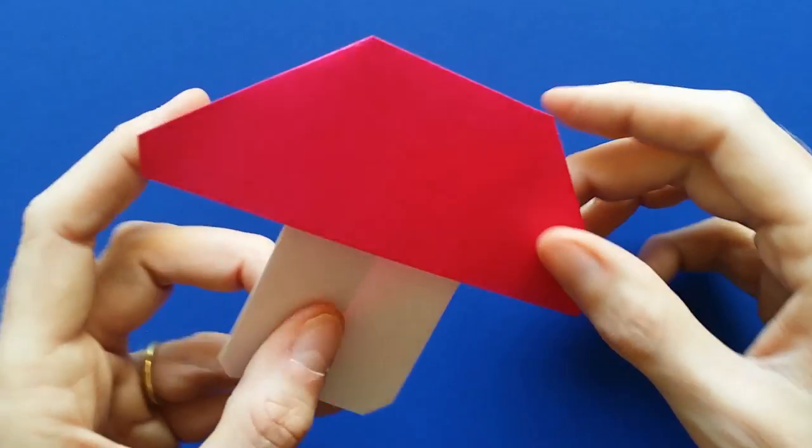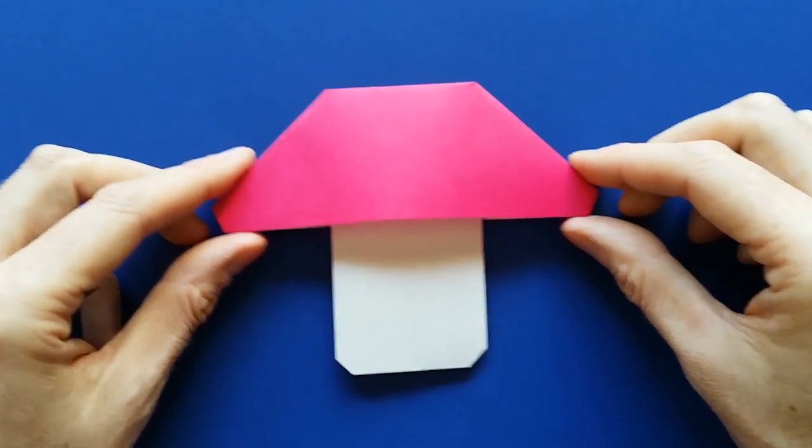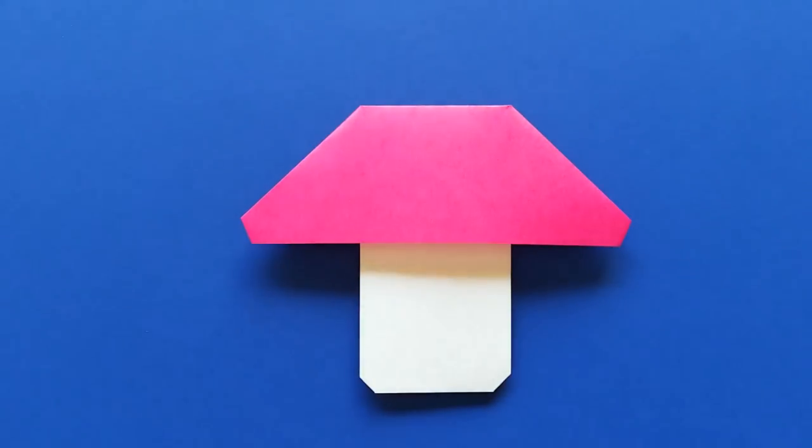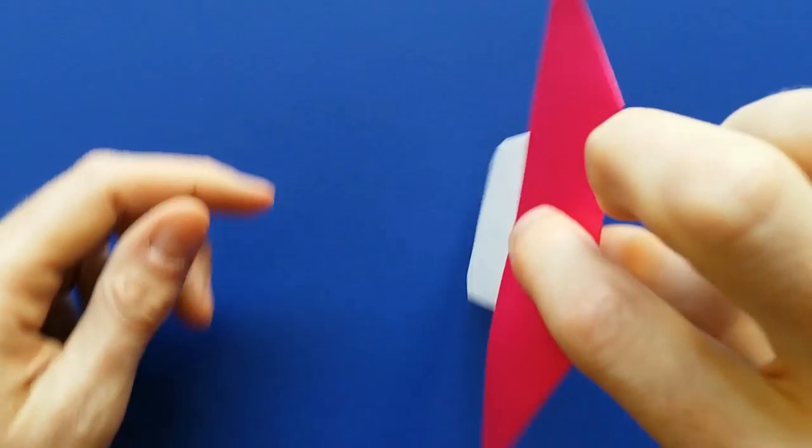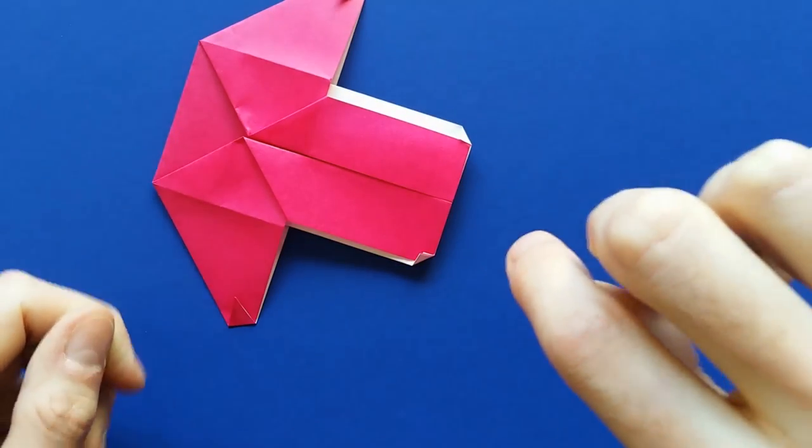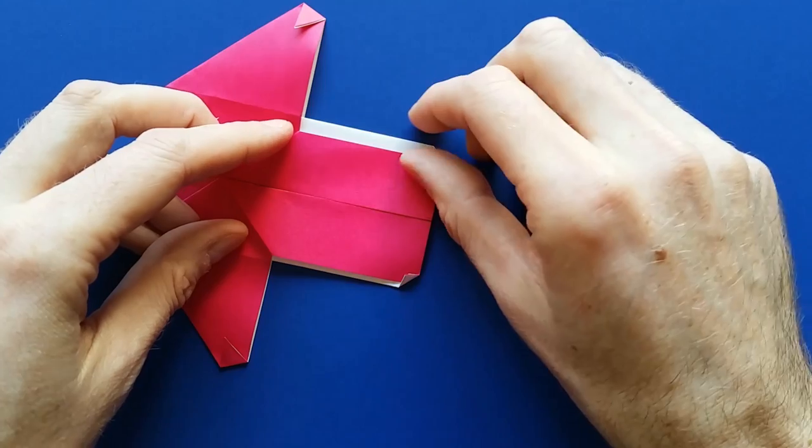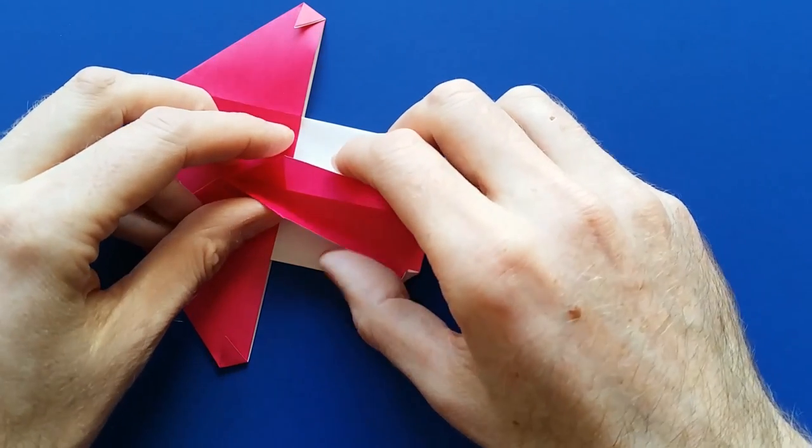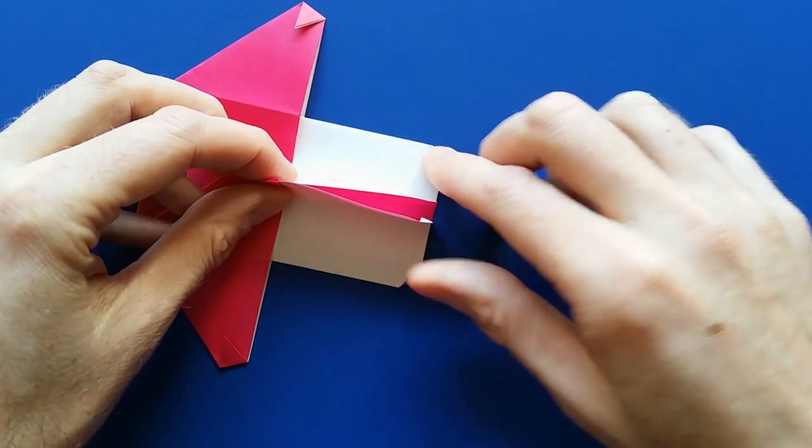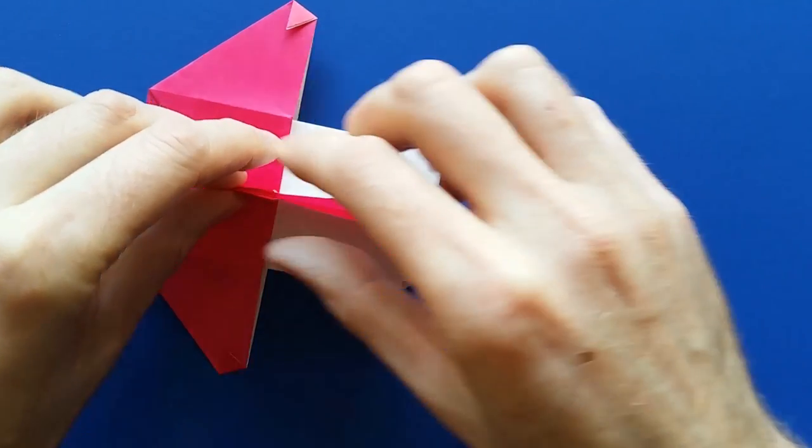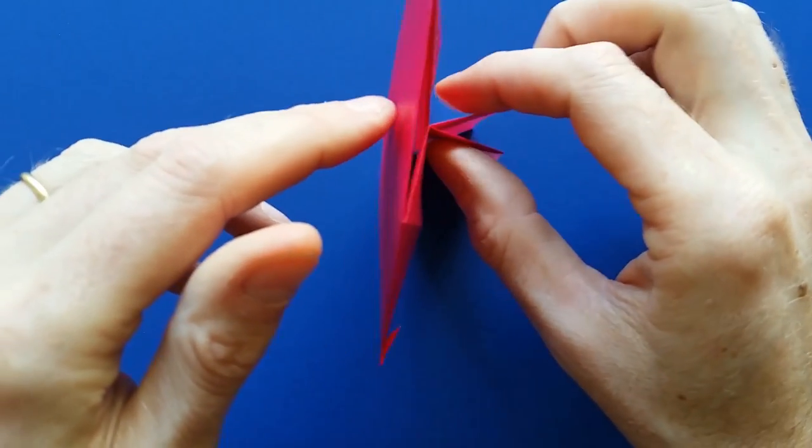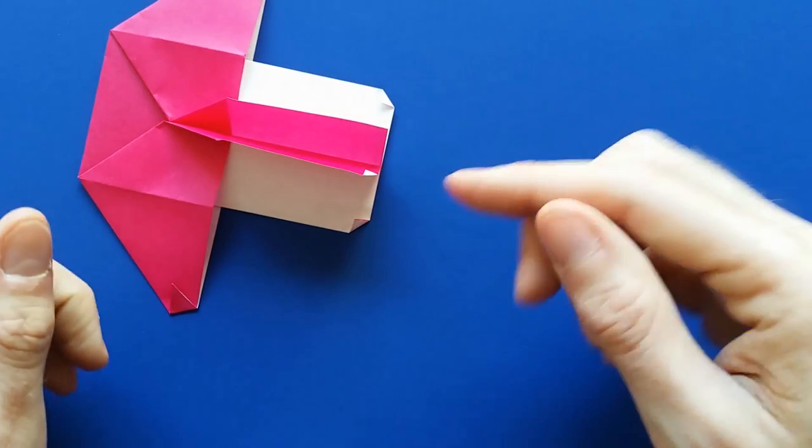If you turn the model over, you have a nice flat mushroom. But if you want your mushroom to stand up, what you can do is use those two flaps here to give more support to your mushroom. Like this. And you can try to make it stand up, and it will fold again.